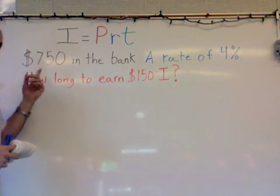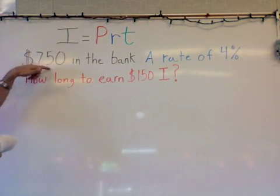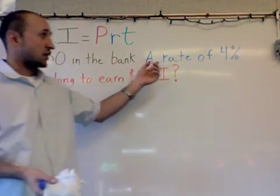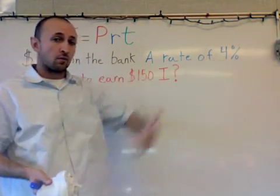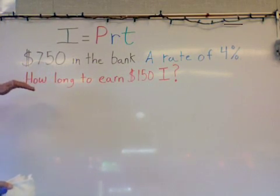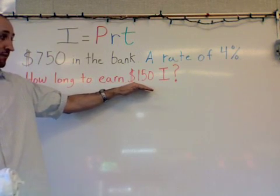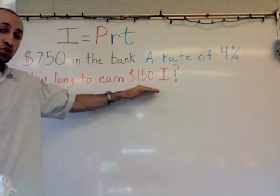So let's see what we're dealing with. This time around, we put $750 in the bank. That's a lot of money. And now the bank is giving us an interest rate of 4%. Now what we want to find out is how long is it going to take to earn $150 in interest.